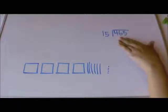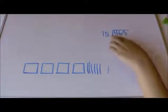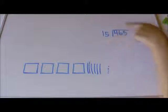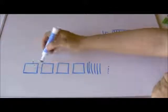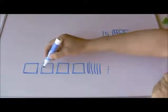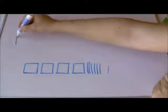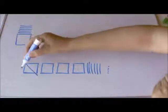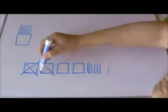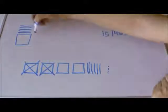If I make a rectangle out of 465 with 15 as one side, what is the other side? The first thing I can do is take this hundred and five tens. I'm going to go one, two, three, four, five — so I've used up this hundred and five tens from here. I still have five left.